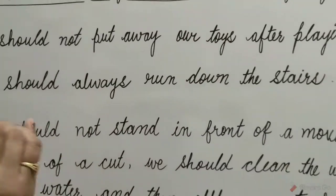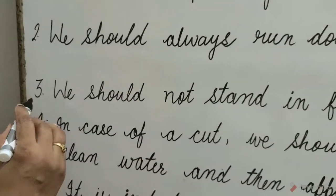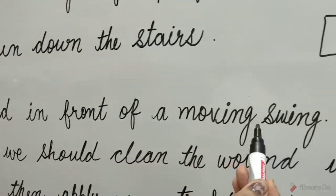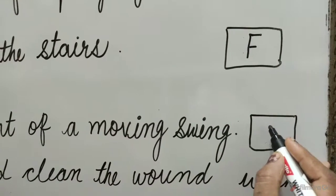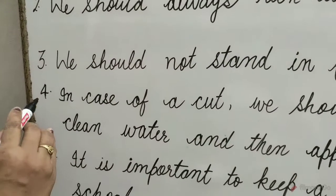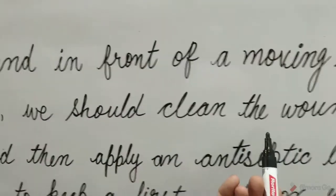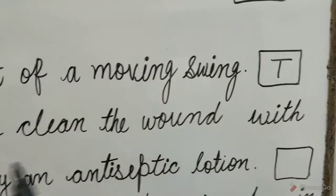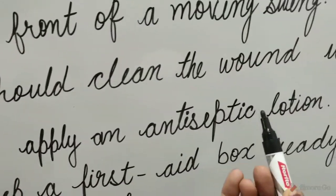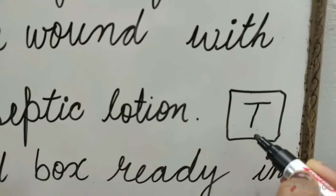We should go slowly on the stairs. Question 3: We should not stand in front of a moving swing. Yes children, it is true. So write T in the box. Question 4: In case of a cut, we should clean the wound with clean water and then apply an antiseptic lotion. Yes children, this is true. So write T in the box.